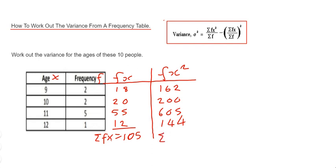So if we add this up, this will give us sigma fx squared, and that is 1111.